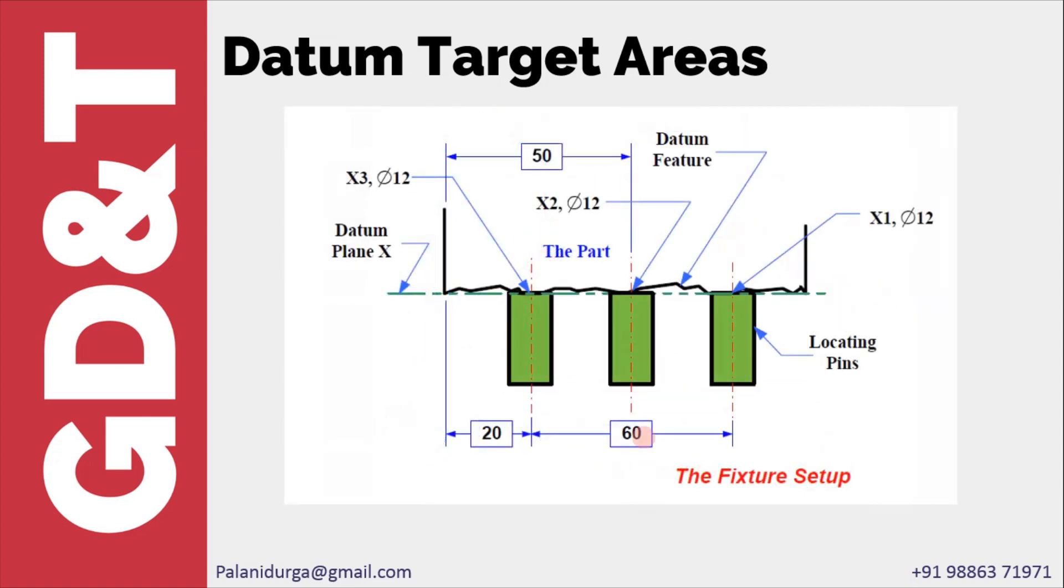On the fixture or gauge, you have a pin of 12 diameter with a flat face on which the component is going to rest. In this example, if it is square, then the pin should also be of square shape with the area whatever is given in the feature control frame. This is how we get datum targets in ASME Y14.5.